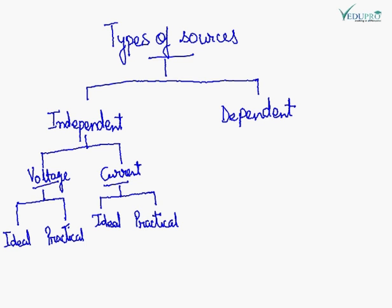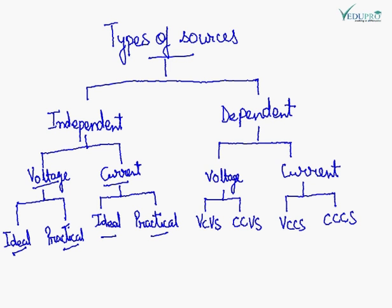They are further classified as ideal and practical, and current source is also ideal and practical. Now we will see the classification of dependent sources. Dependent sources are further classified as voltage source and current source.